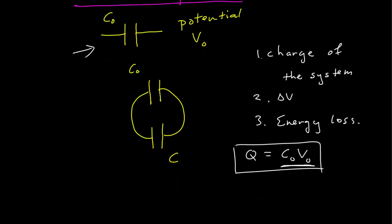The second question is: what is the new delta V? In our new system, we have some change in potential across these two capacitors. All connected conductors are at the same potential. So this wire and this side of the capacitors are all at one potential — let's say green V — and the other side is all at potential blue V. The delta V across each capacitor has to be the same.